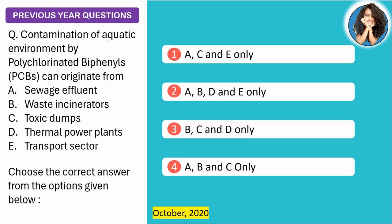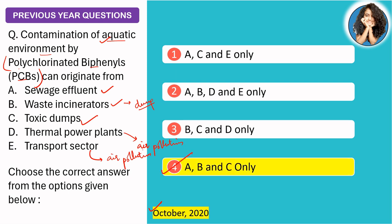The next question, from October 2020, asks: contamination of the aquatic environment by PCBs can originate from which sources? Waste incinerators can cause water pollution. Toxic dumps also cause water pollution. Transport is associated with air pollution only. So three options relate to aquatic contamination, and the correct choices exclude the air-pollution-only option.